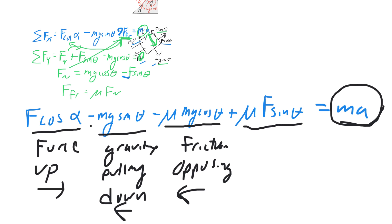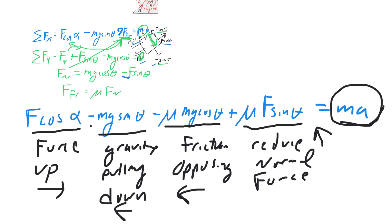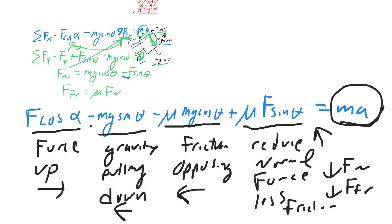The last term, mu·F sine alpha, is interesting. This represents how much the applied force is pulling the block up off the surface, which reduces the normal force. Reducing the normal force reduces friction, which means less opposing force — and that's why it's positive, because it actually adds to the acceleration up the ramp. I hope that's helpful. Let me know if you have any questions.